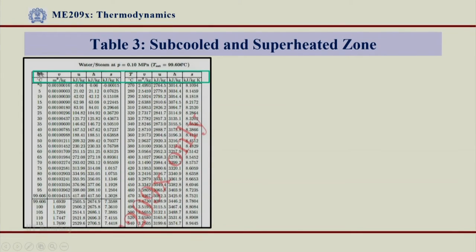The first important thing is the properties that Table 3 gives. Because we are talking about a single-phase region — the sub-cooled region and the superheated region — we are not talking about VF, VG, UF, or UG here. Those appeared in Table 1 and Table 2 because they dealt with the LV region and two-phase region. Here, since we are in a single-phase region, we only have V, U, H, and S.